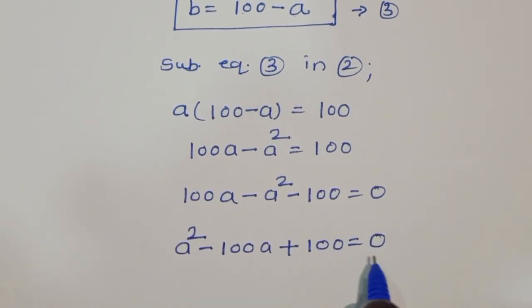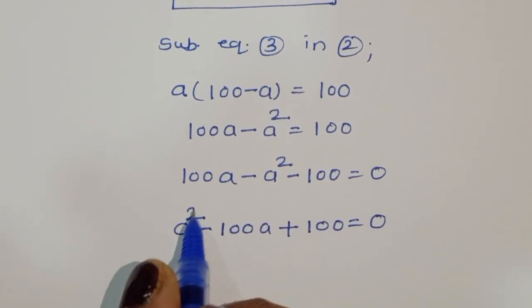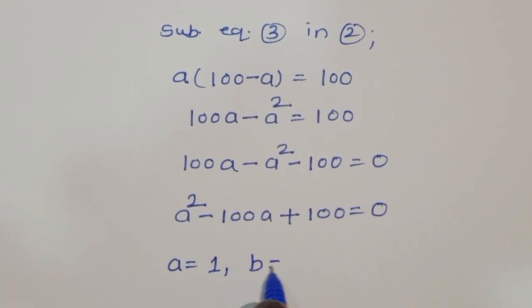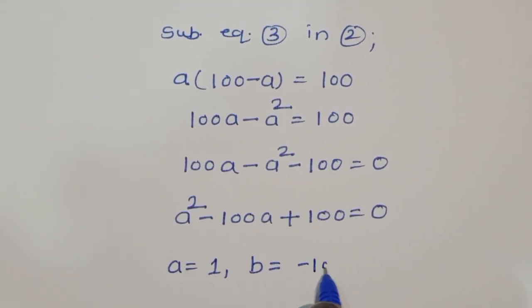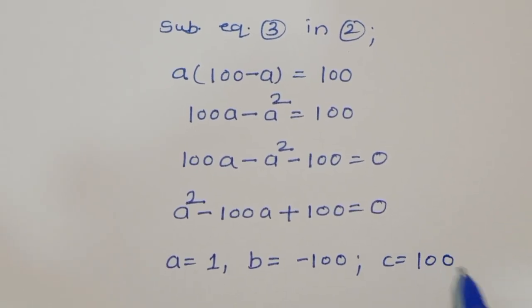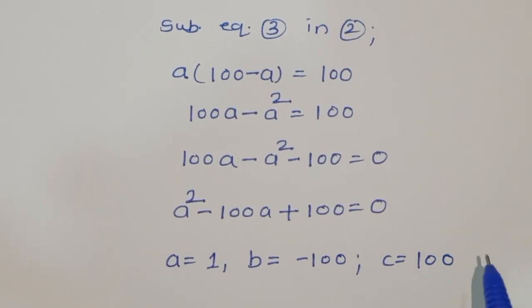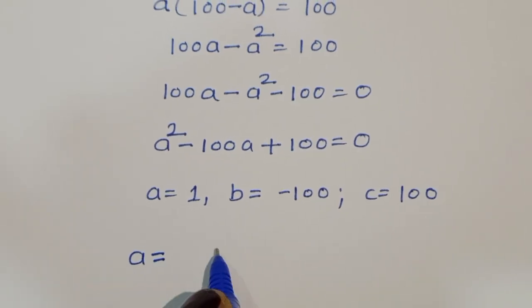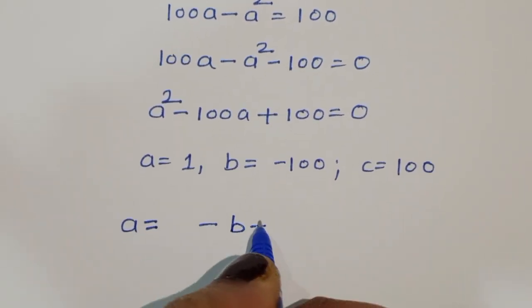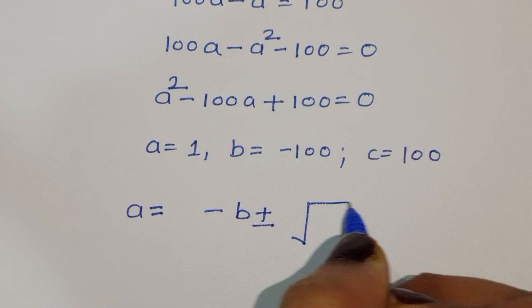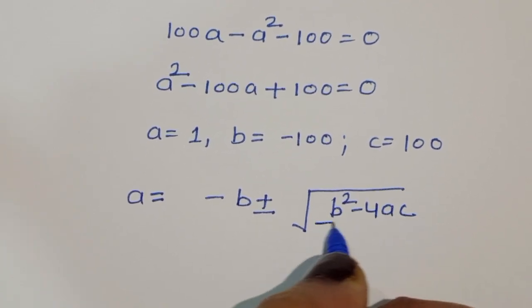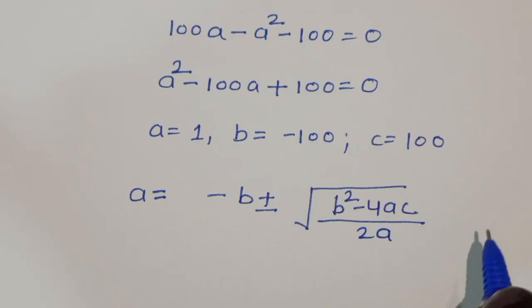Now we have the quadratic equation. The coefficient of a squared is 1, b is equal to minus 100, and c is equal to 100. We use the quadratic formula: a equals minus b plus or minus square root of b squared minus 4ac, all upon 2a.